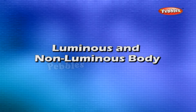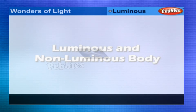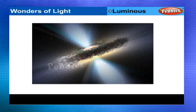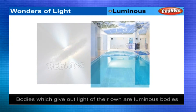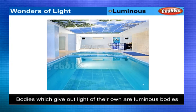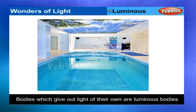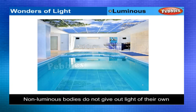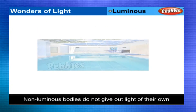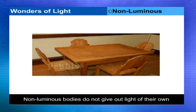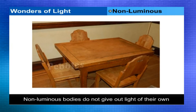Luminous and non-luminous bodies: The Sun, the stars, a candle, an oil lamp, etc. give us light. Such bodies, which give out light of their own, are called luminous bodies. Most objects around us do not give out light themselves, but become visible when light from a luminous body falls on them and some part of the reflected light enters our eyes. Such bodies, which do not give out light of their own, are called non-luminous bodies.